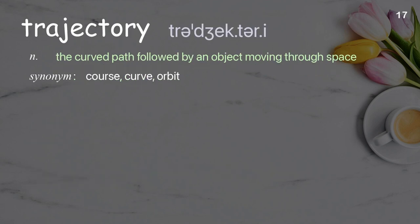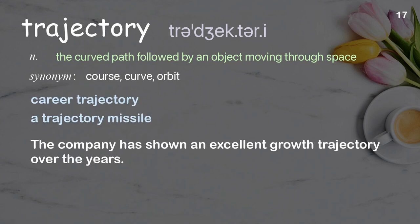Trajectory: the curved path followed by an object moving through space. Examples: career trajectory, a trajectory missile. The company has shown an excellent growth trajectory over the years.